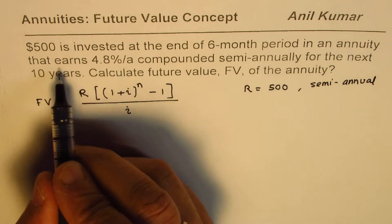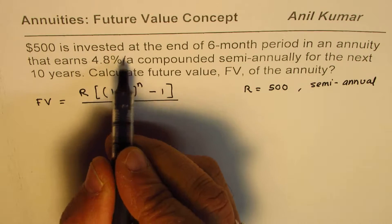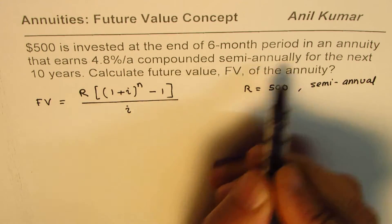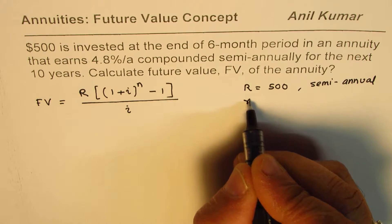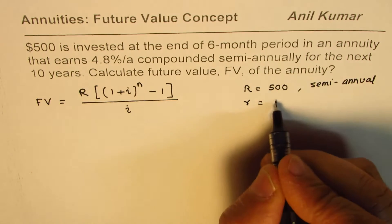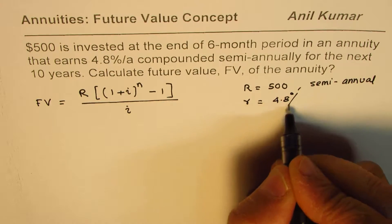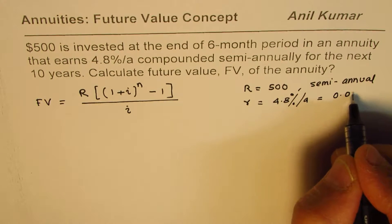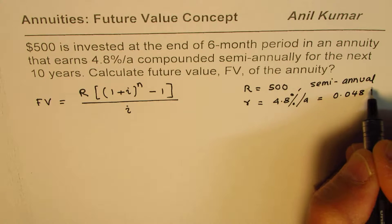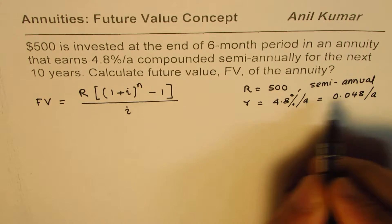It says 4.8% per annum compounded semi-annually, so 4.8% per annum is the interest rate. I use the word r to show 4.8% per annum, which really means 0.048 per annum. Convert percent to decimals.